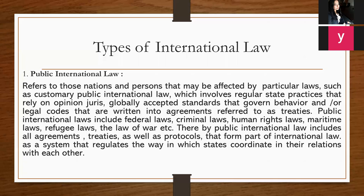Types of international law: public and private. Public international law refers to those nations and persons that may be affected by particular laws, such as customary public international law, which involves regular state practices that rely on opinion jurists, globally accepted standards that govern behavior, and legal codes written into agreements referred to as treaties. Public international law includes federal laws, criminal laws, human rights laws, maritime laws, refugee laws, the laws of war, and so on.